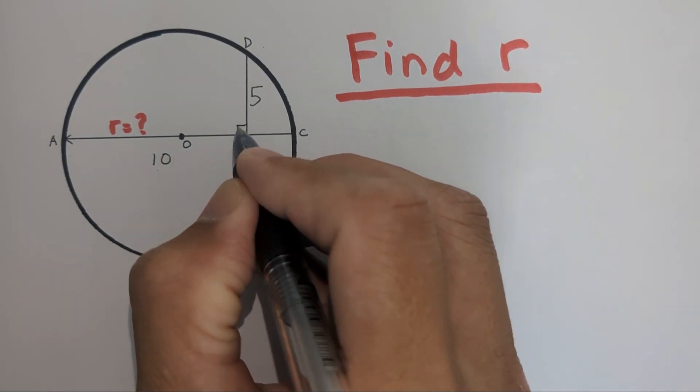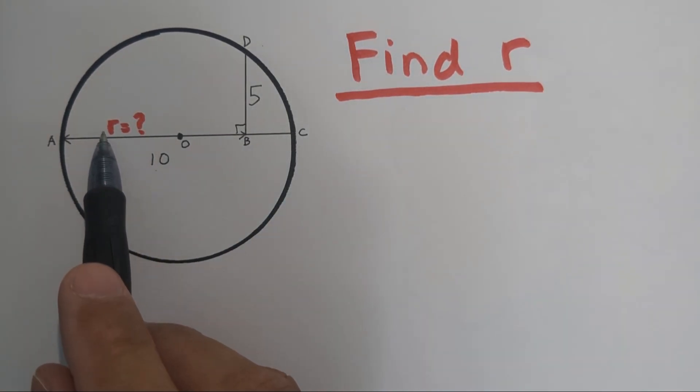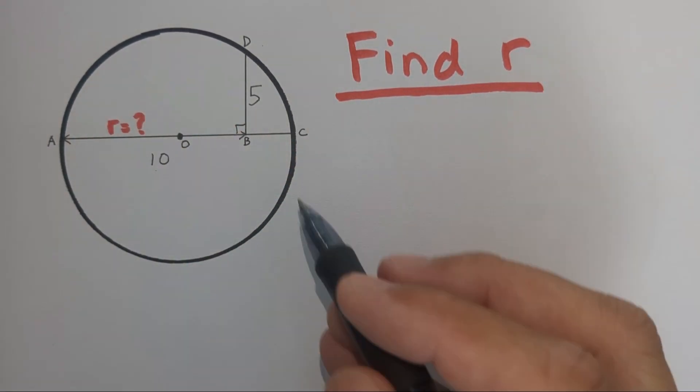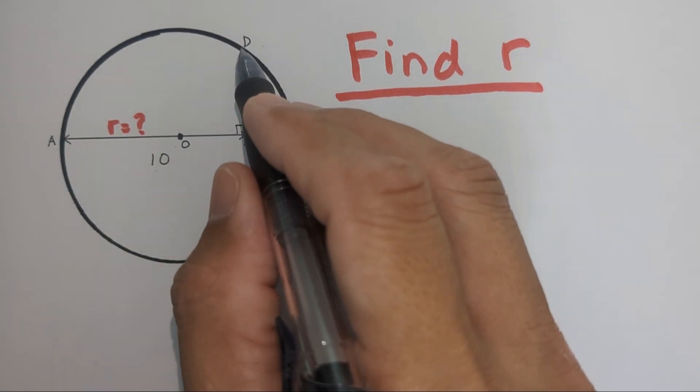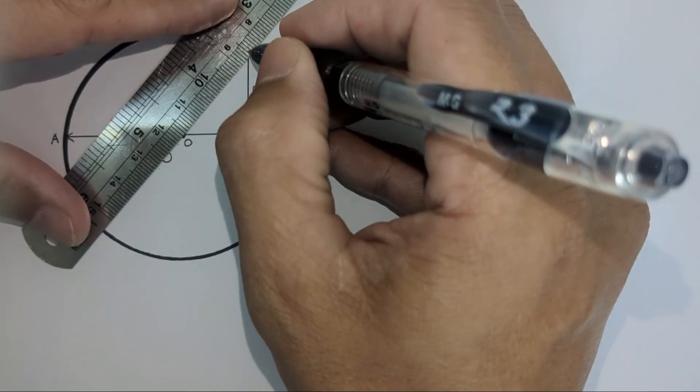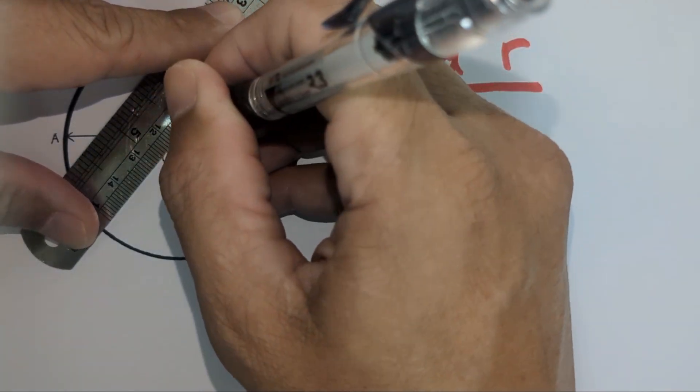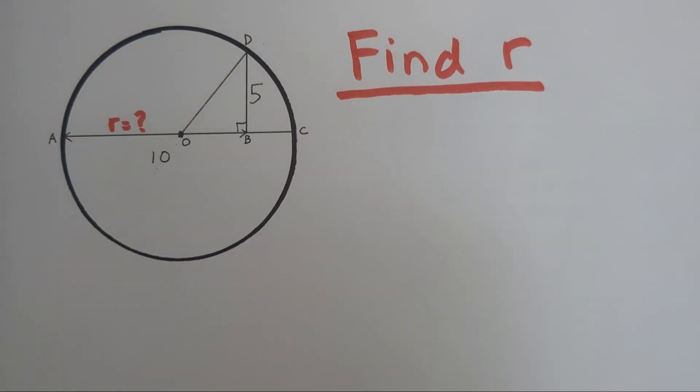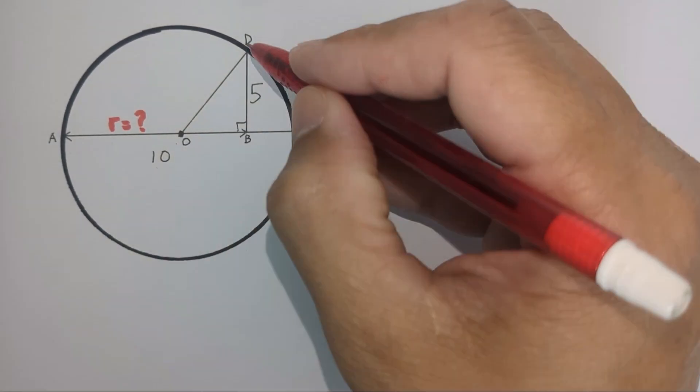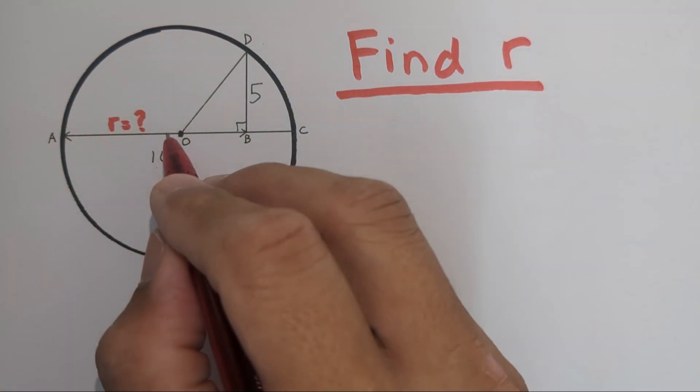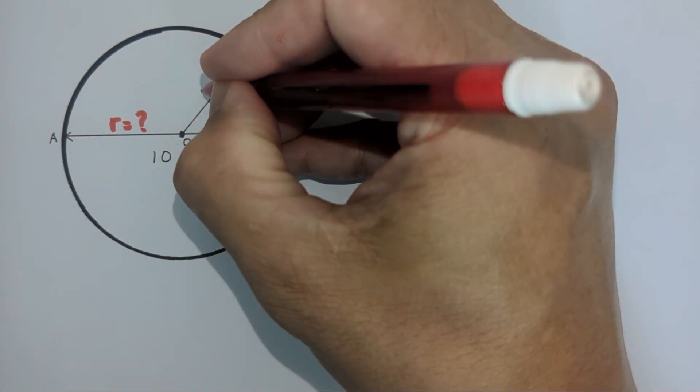Is there any way we can find the radius? We can draw a triangle OBD here. We note that OD is the same as AO because it is the radius.